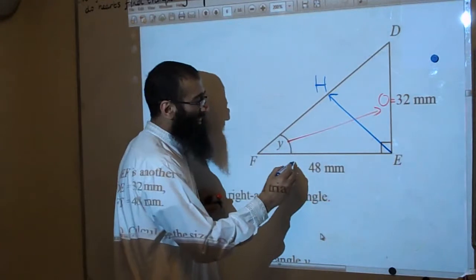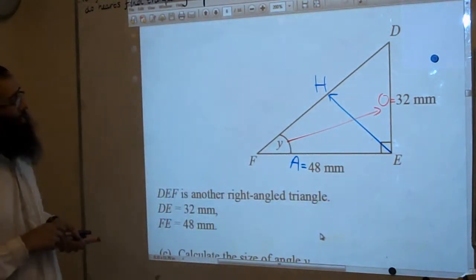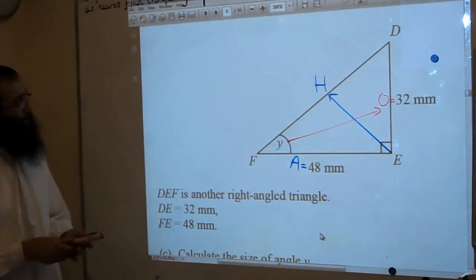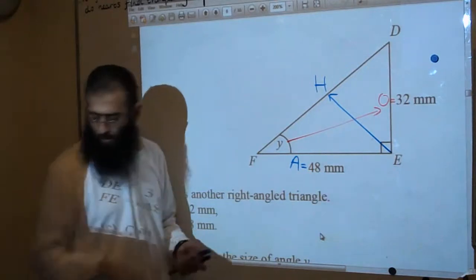Okay, and then the remaining side will have to be adjacent. Adjacent. You always label the last. So now we've labeled it all up. And we want to work out the angle. The angle here is the culprit. I'm going to work that out.